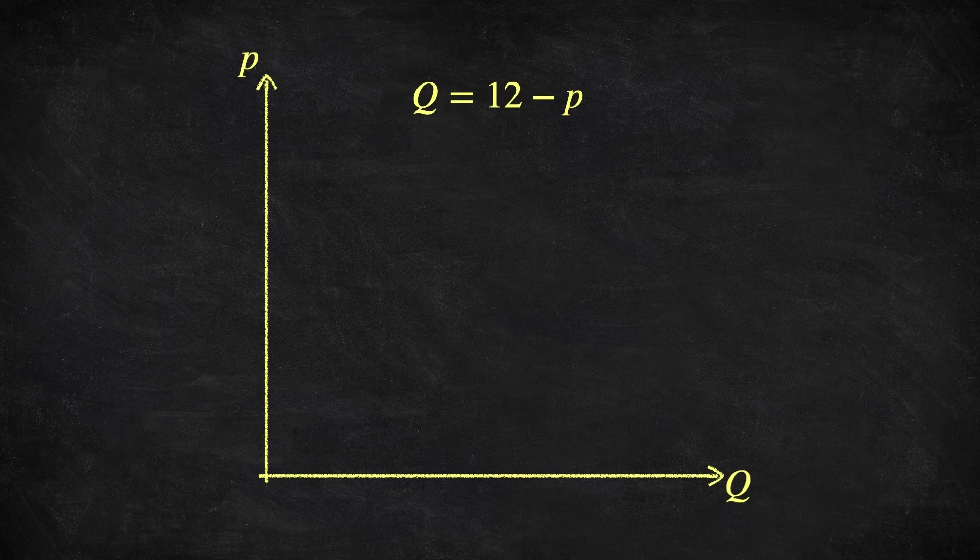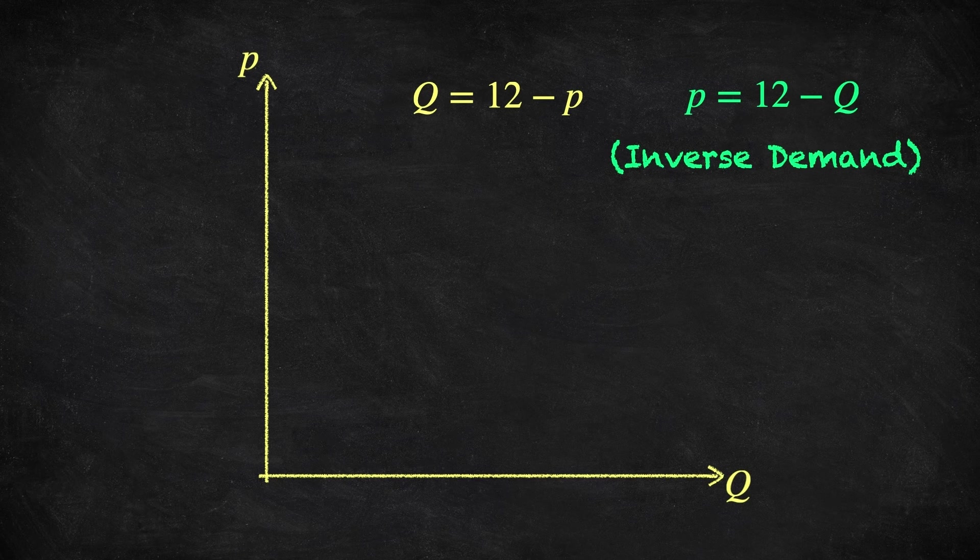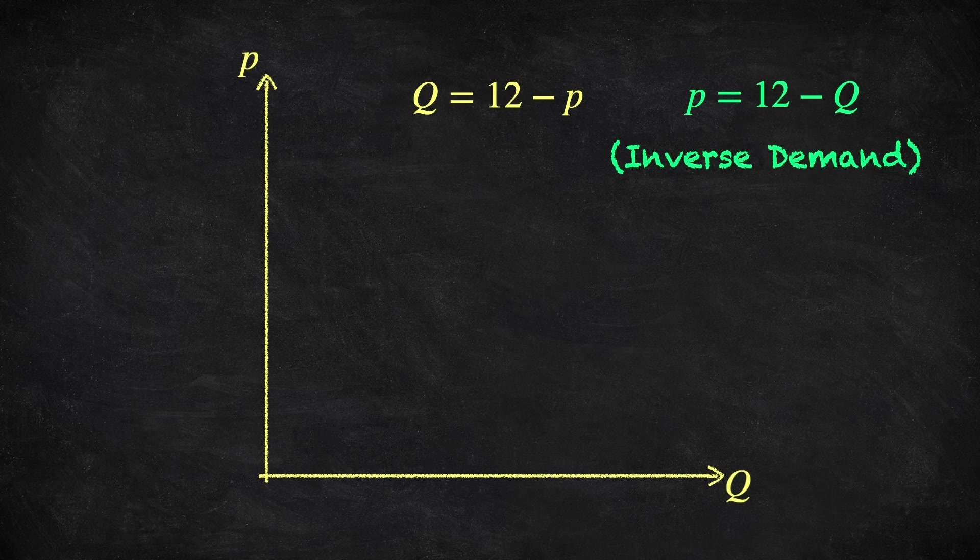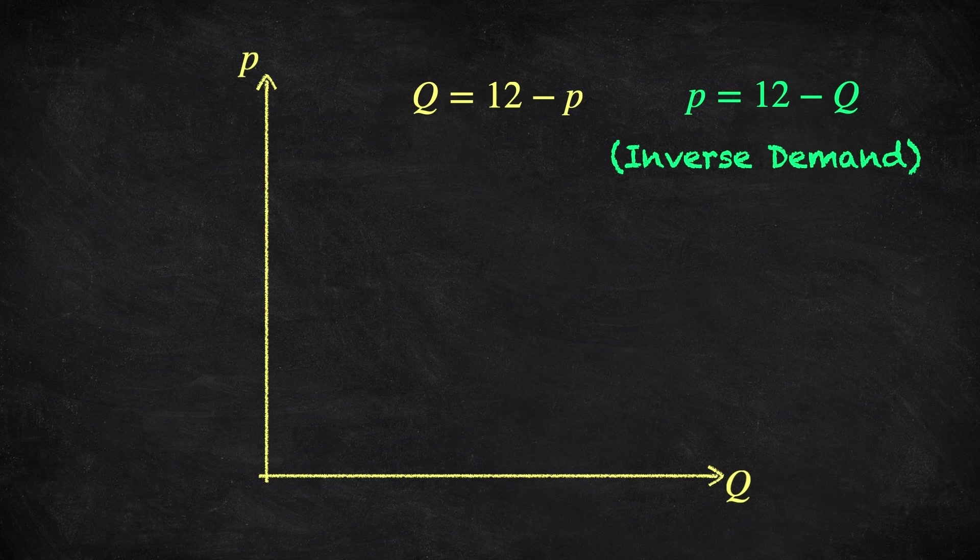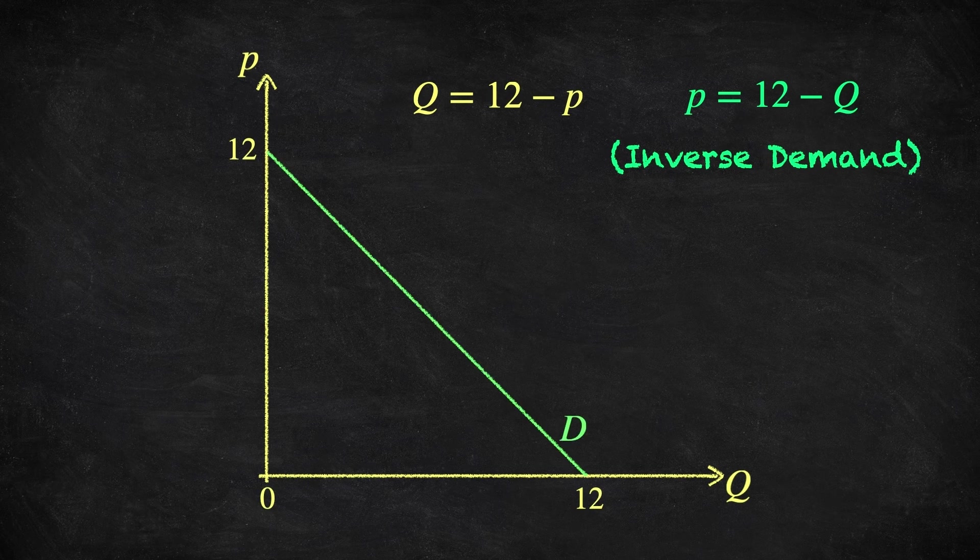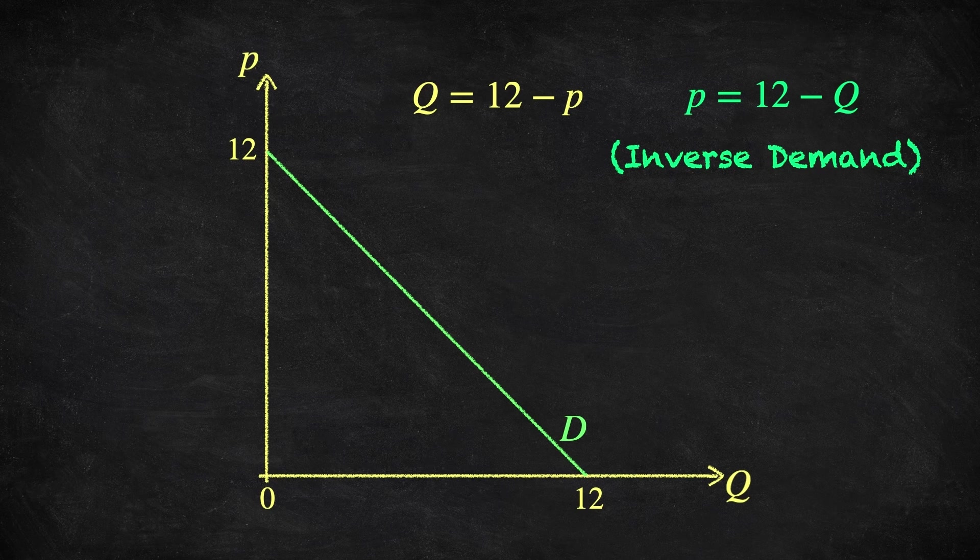So to draw the demand function, we need to invert it. In this case this is quite simple. Rearranging the demand function to get price by itself on the left hand side, we see that P equals 12 minus Q. This is called inverse demand, and it's what we're really drawing when doing diagrams of demand functions. This representation of a demand function is called a demand curve, even though in this case it's just a straight line.